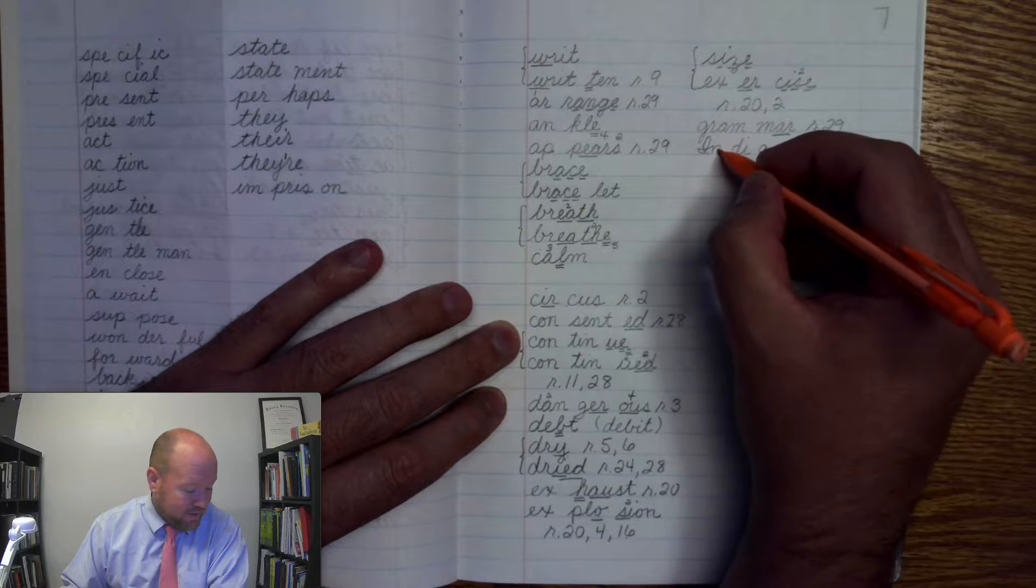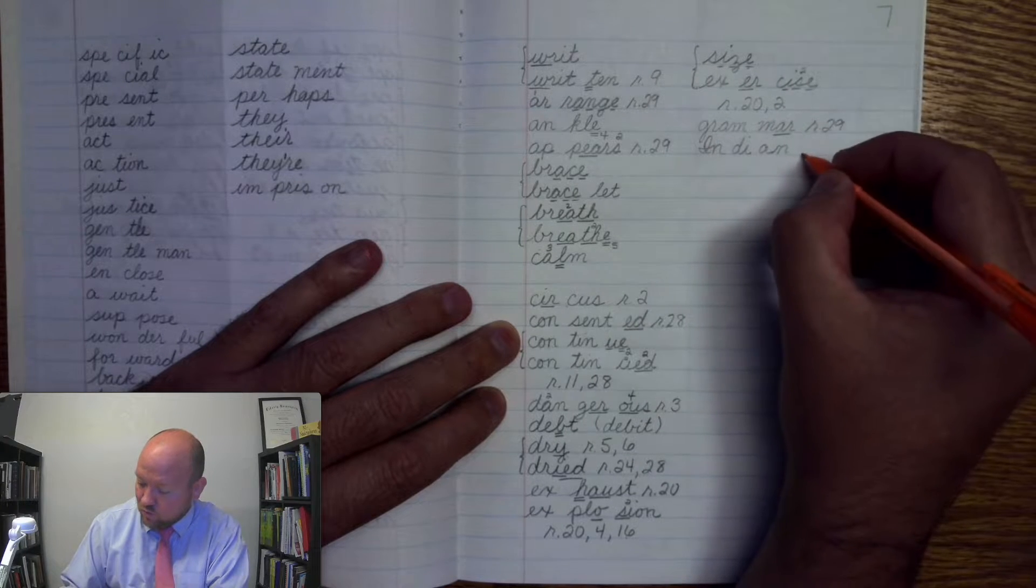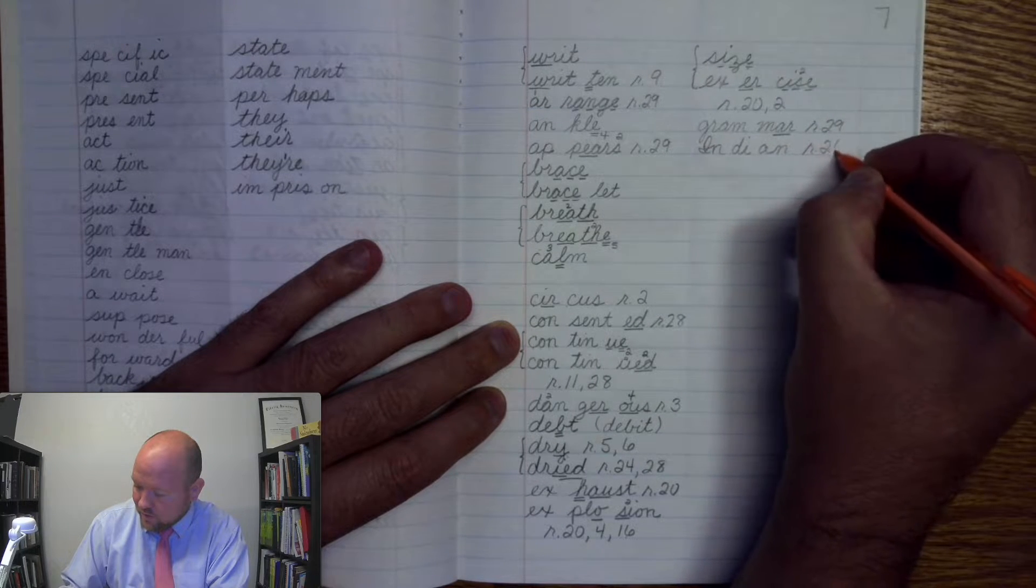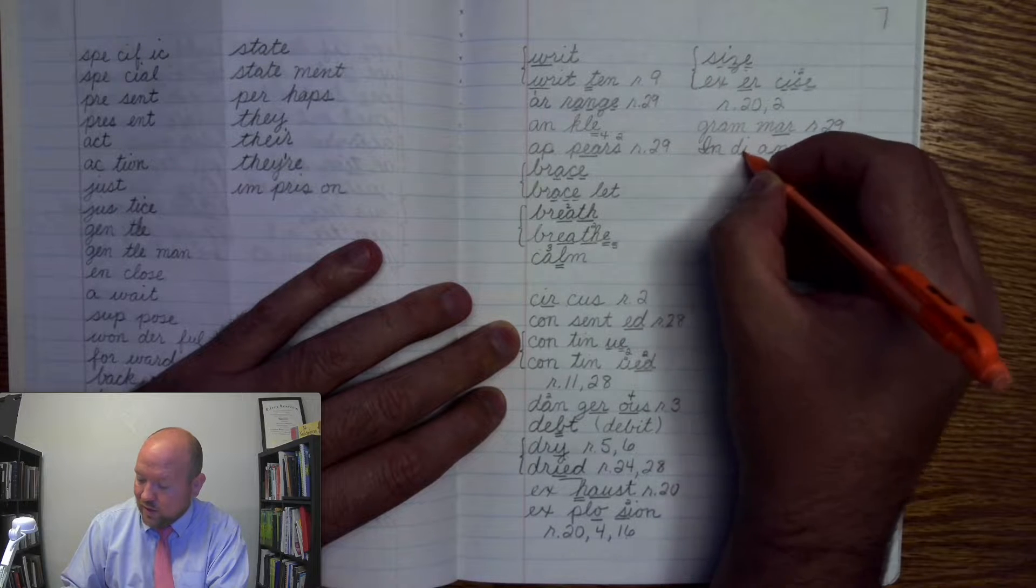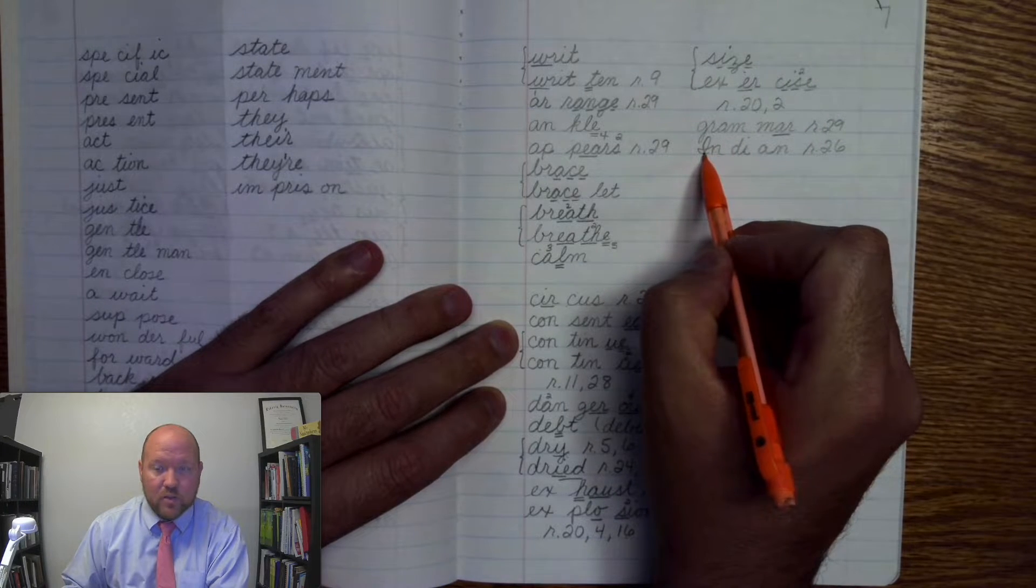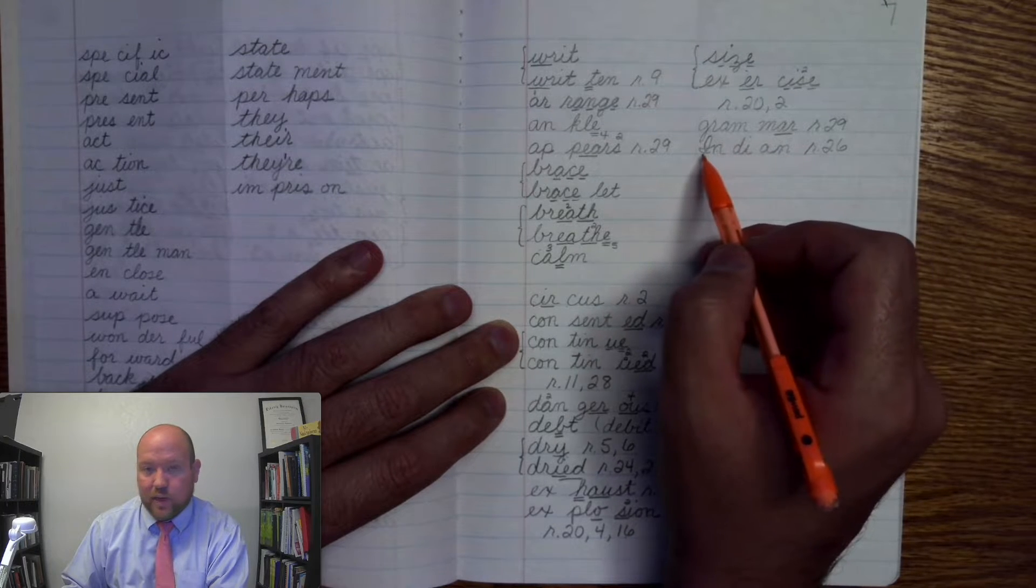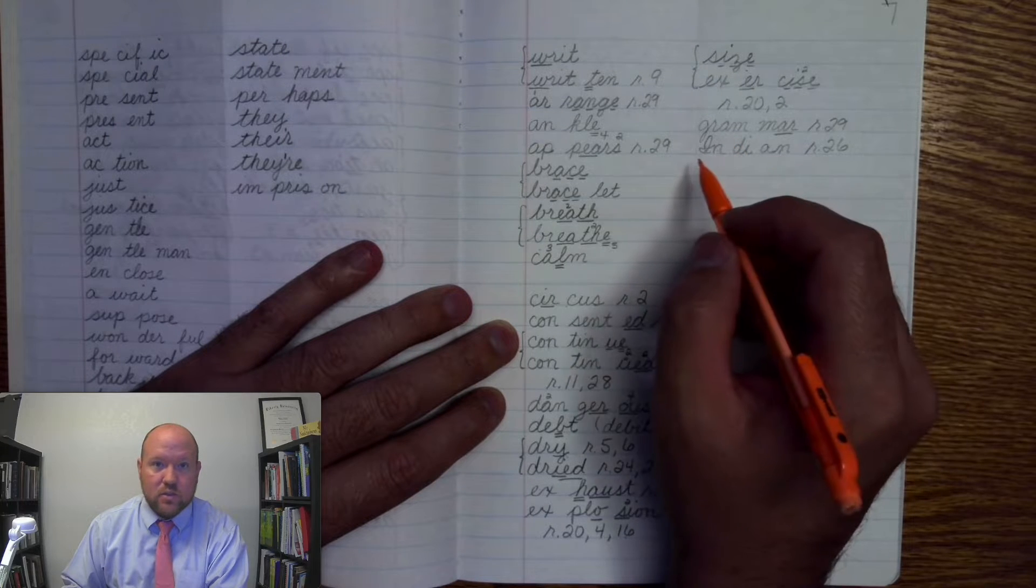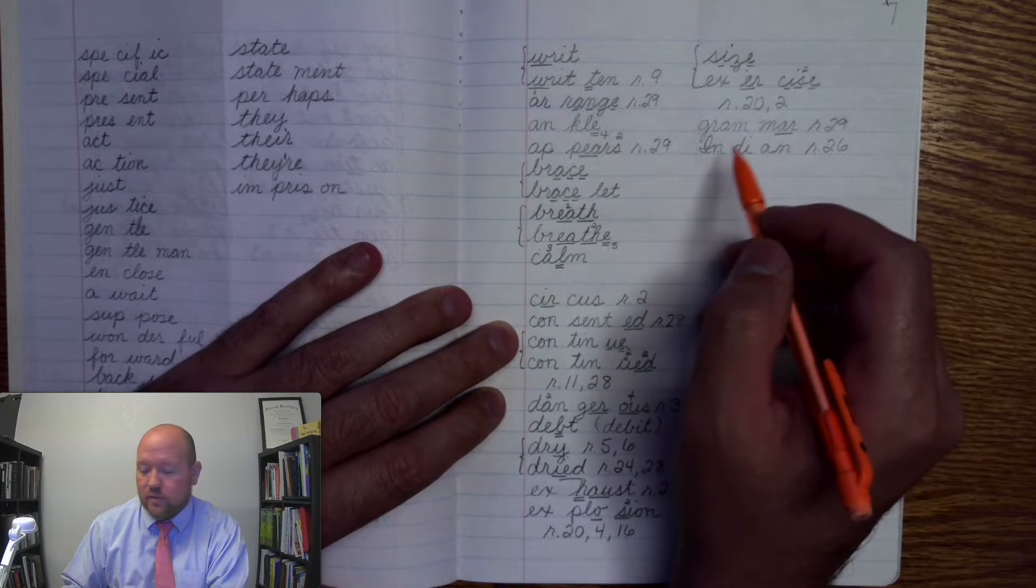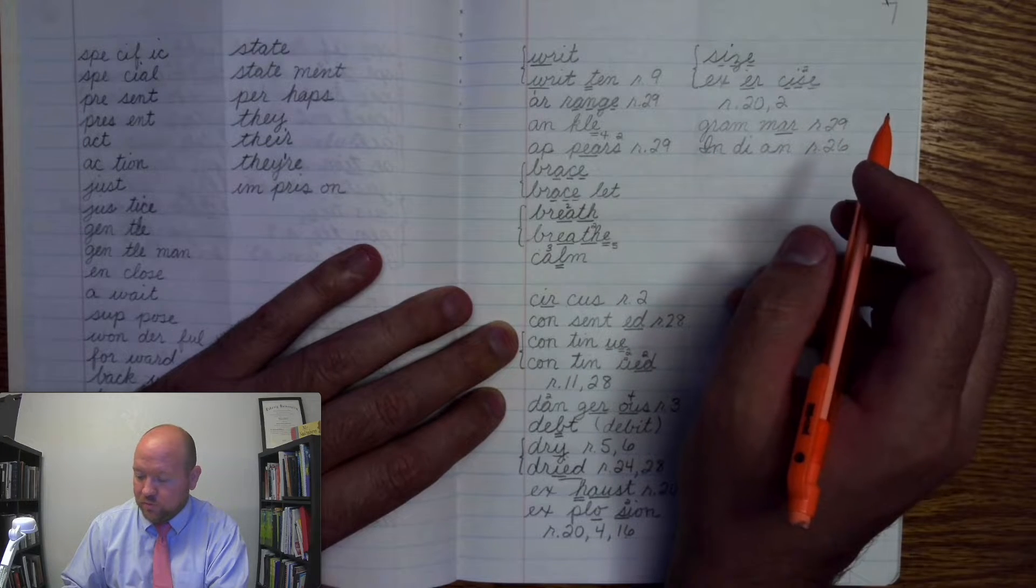Markings. I-N, D-I, A, oops right, I, rule 26. A-N, D-I, A-N. We capitalize it because it's a proper noun. It's referring to a specific people. And so we capitalize it. Just like we capitalize American or Chinese or German. We capitalize it because it's referring to a specific people.